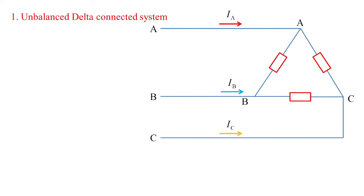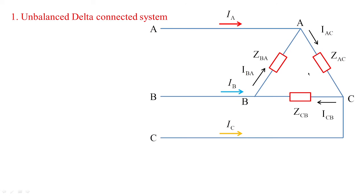Let us go with the basics of an unbalanced delta connected system where you have A, B, C and the currents flowing into the delta are treated as IA, IB, and IC according to the given phase sequence. So if the phase currents have to flow into the loads, this is how the currents will flow. We assume these directions and when we employ KCL at node A we get the line current IA. Similarly, applying KCL at node B gives IB and similarly IC. One thing to keep in mind while dealing with delta networks: the line voltage and the phase voltage are one and the same.